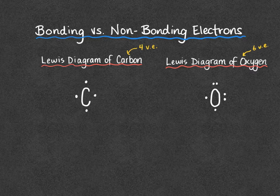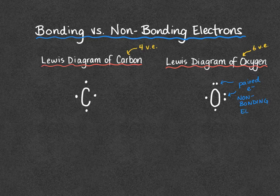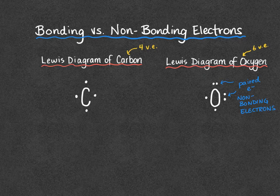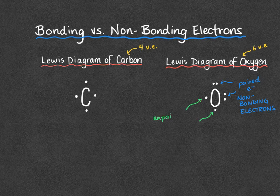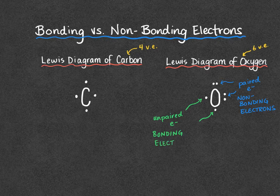You'll see some differences in our two Lewis diagrams. On oxygen we have two sets of paired electrons. These paired electrons are called non-bonding electrons, because they are already paired up, they're not capable of forming a covalent bond and are just going to hang out in that molecule. On carbon and on oxygen, though, we also have unpaired electrons. These unpaired electrons are what we call bonding electrons, because they do not have a partner yet — they're going to seek out a partner electron in a neighboring atom and form a covalent bond.